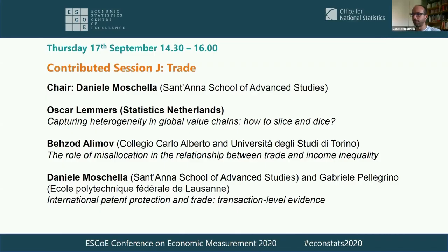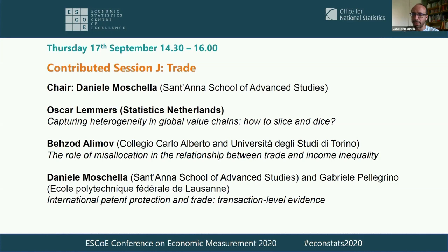Welcome everybody to the session on trade at this conference. The first speaker is Oskar Lemmers from Statistics Netherlands, presenting a paper on Capturing Heterogeneity in Global Value Chains. The second speaker is Bezov Alimov from Collegio Carlo Alberto and Università di Torino, presenting on the role of misallocation in the relationship between trade and income inequality. Finally, I am Daniele Moschella from Scuola Superiore di Sant'Anna, Pisa, Italy, presenting on International Patent Protection and Trade.